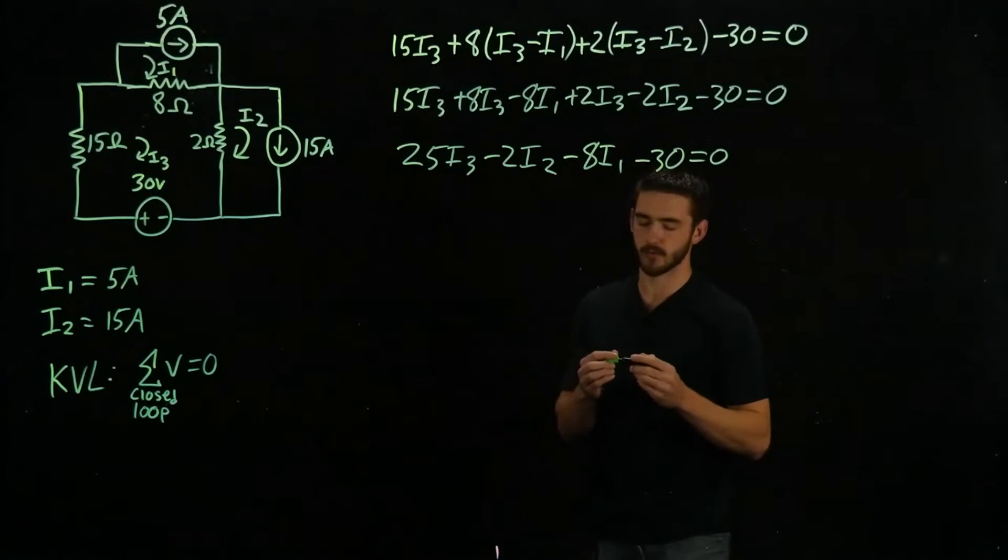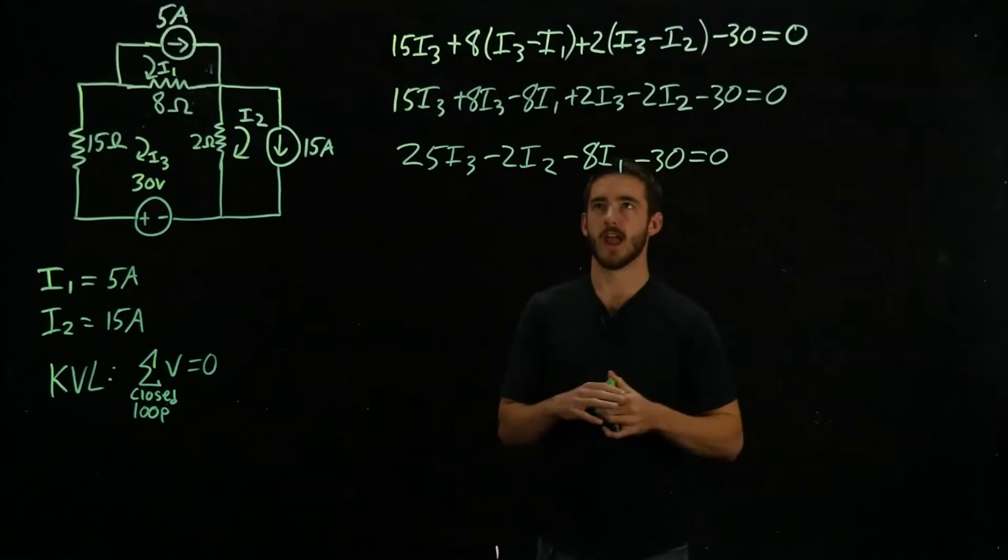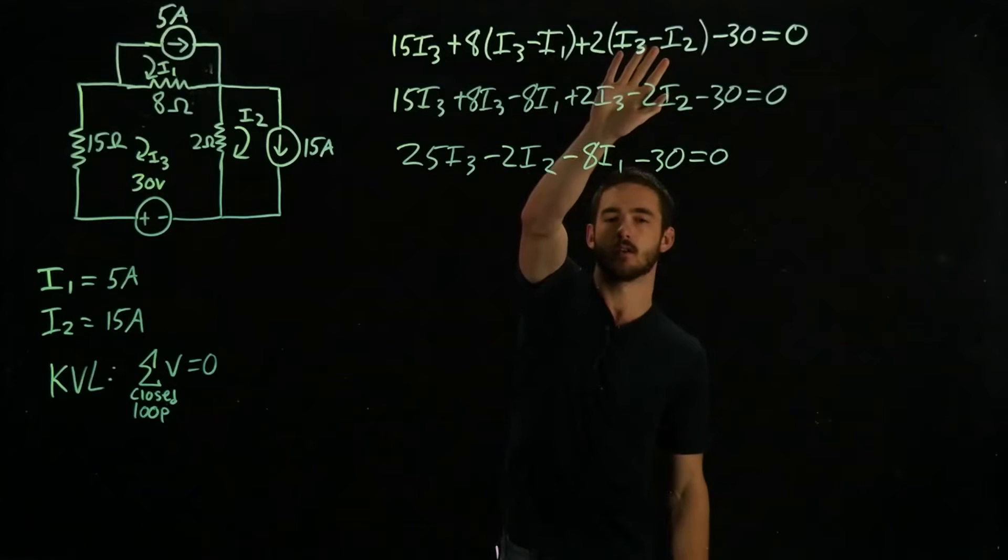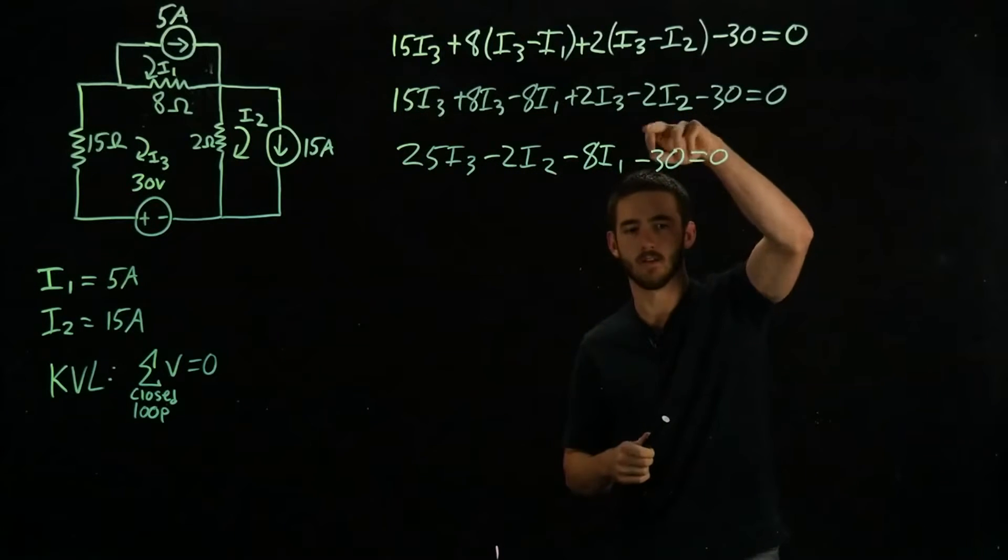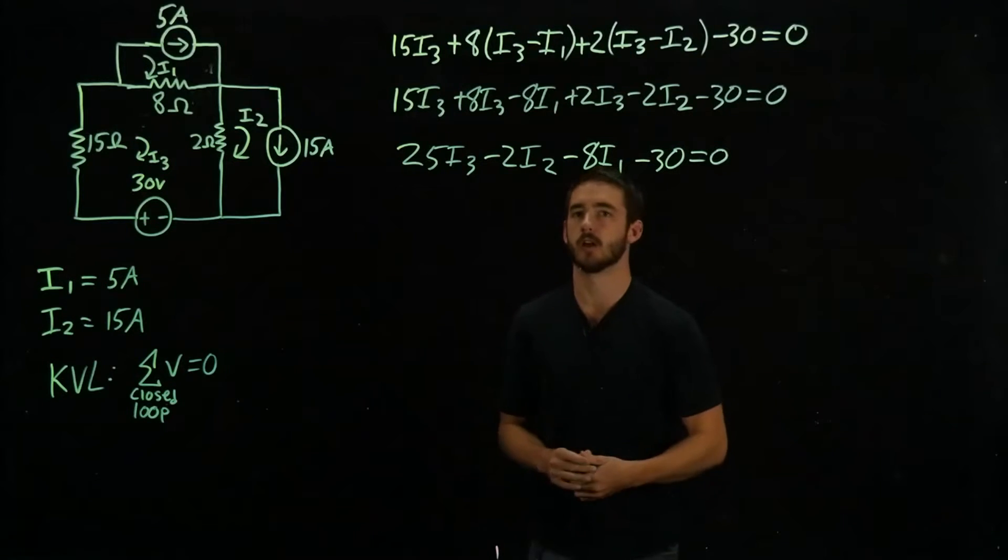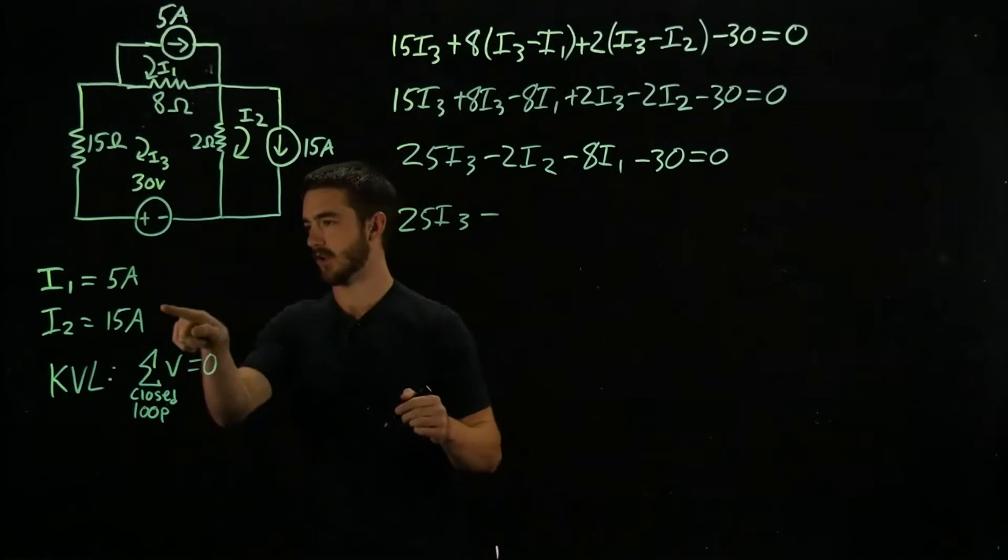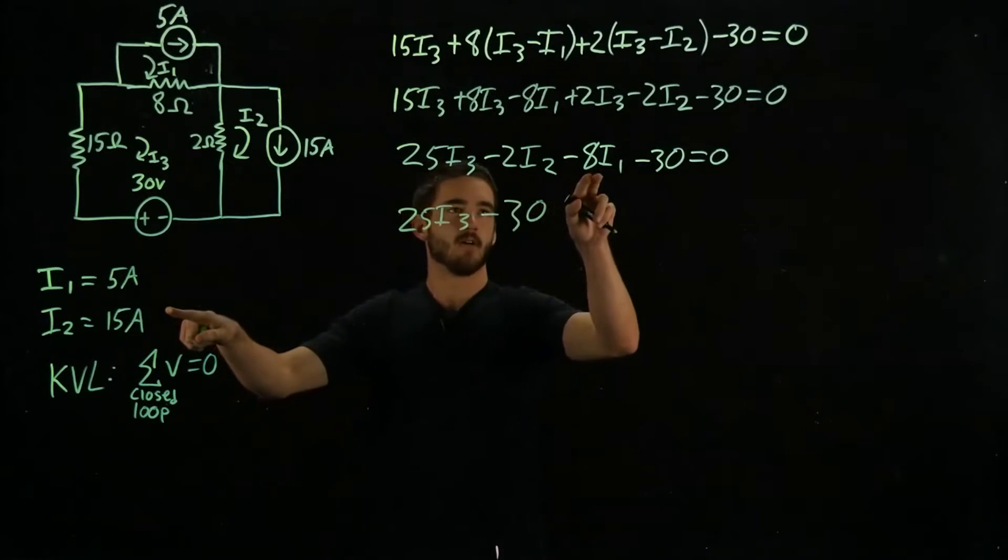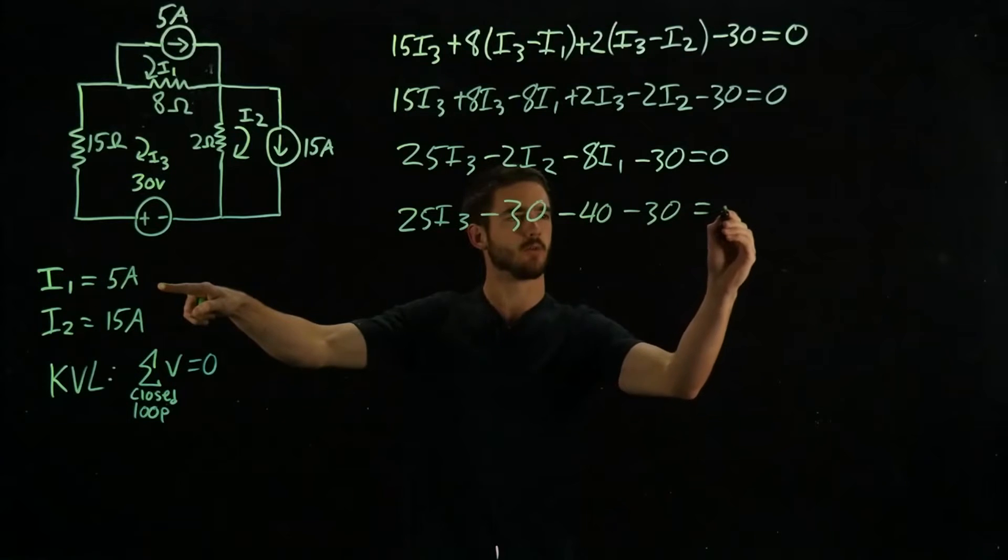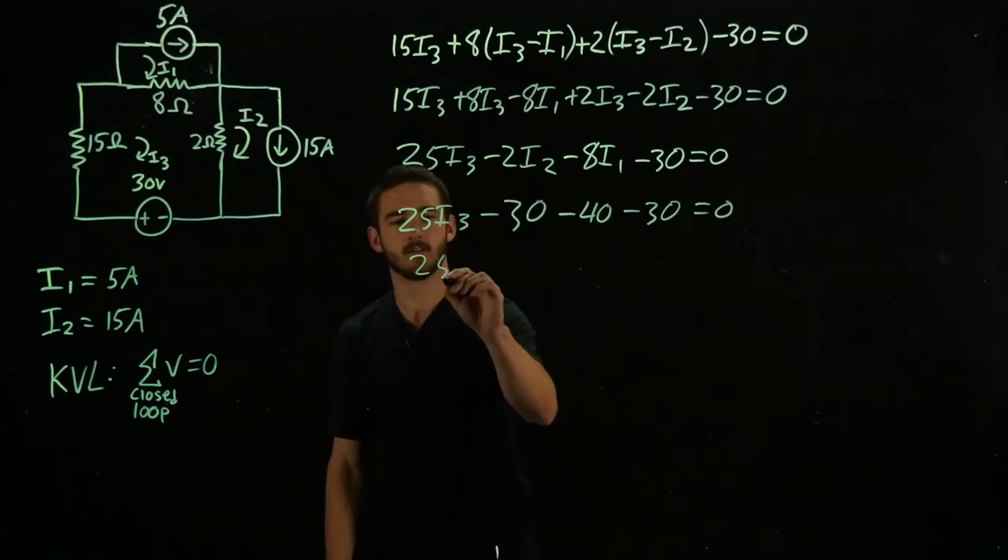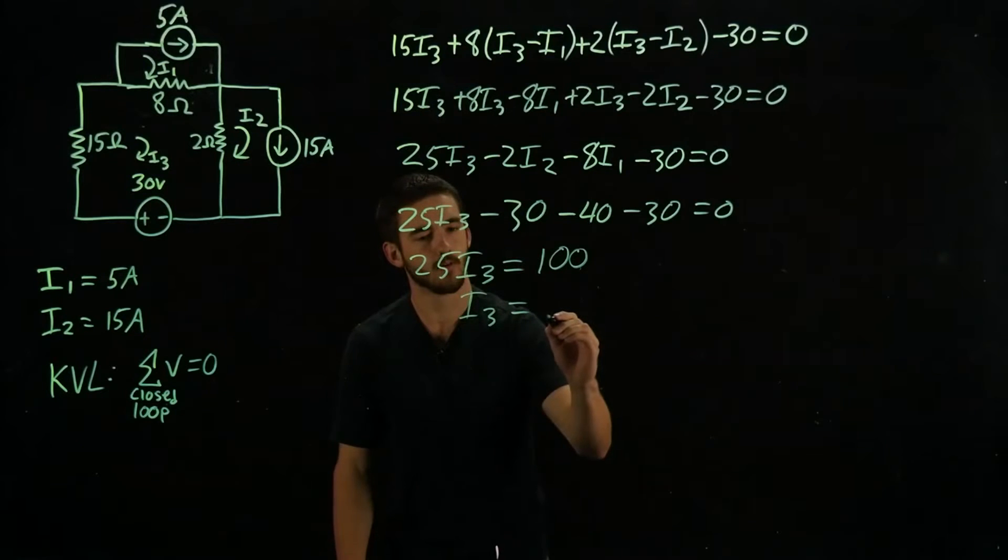And what I like to do when I'm going through problems is do just a quick dimensional analysis. So I didn't write the units in for this 15 and this 8 and this 2, but they're in ohms. And then the units of this are amps. And so we have R times I, which is V, which is good because this 30 right here is at 30 volts. So let's just plug in our values for I1 and I2 and solve for this. So we have 25I3 minus, let's see, what's I2? 15. So minus 30. And then we have 8 times I1, which is negative 40. And then we have minus 30 equals 0. So we have 25I3 equals 100. So I3 equals 4.